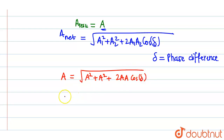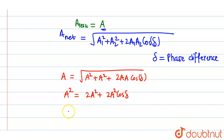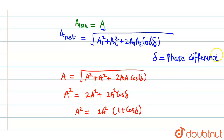Squaring both sides, we get: A² = 2A² + 2A²·cosδ. Dividing through, this simplifies to: 1 = 2 + 2cosδ, and further to: -1/2 = cosδ, giving us 1/2 = 1 + cosδ.